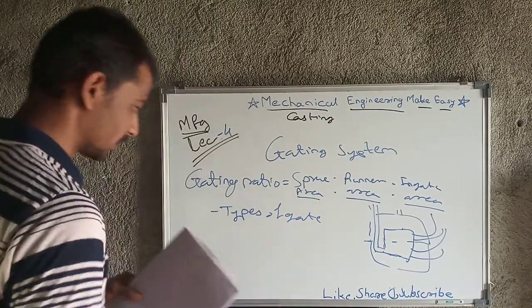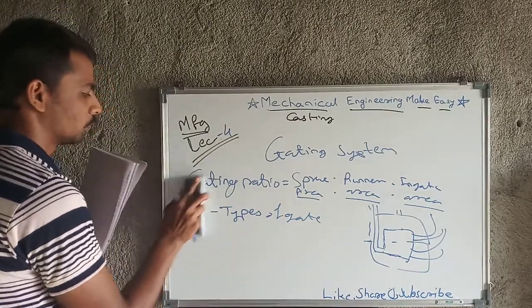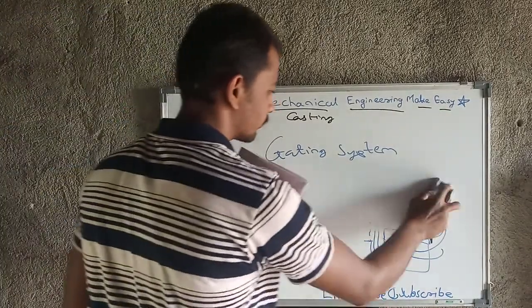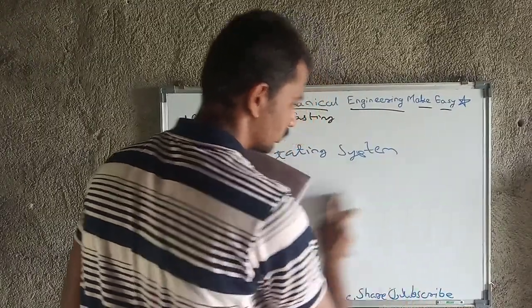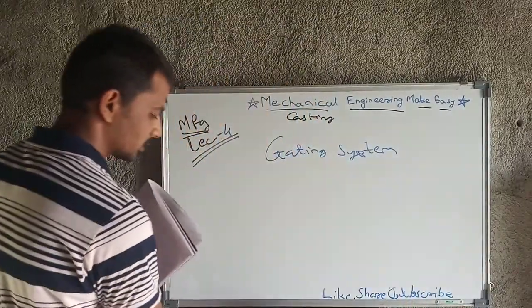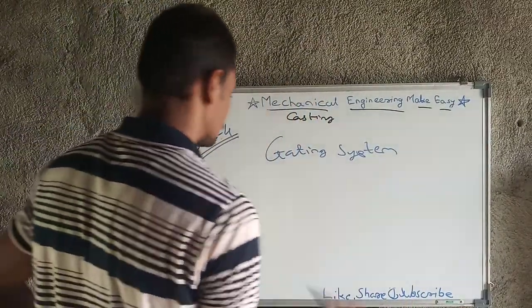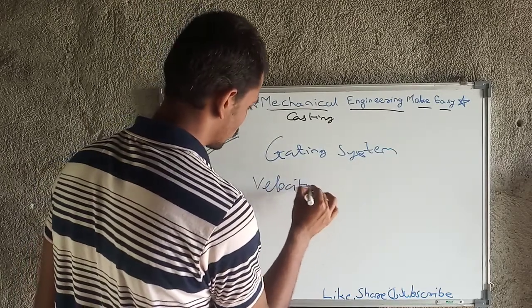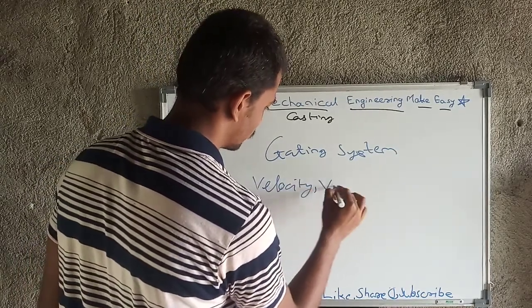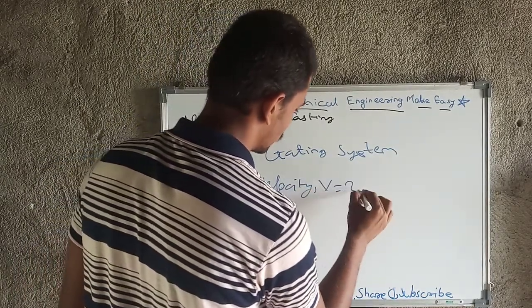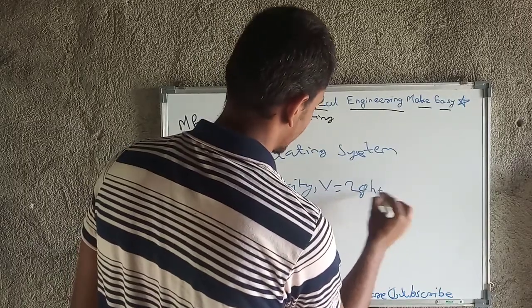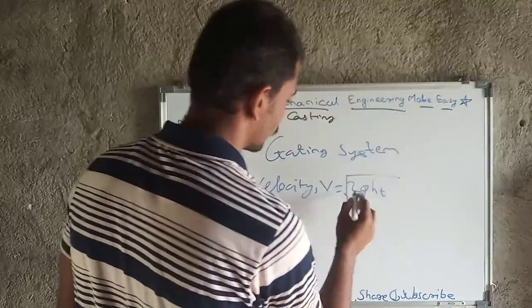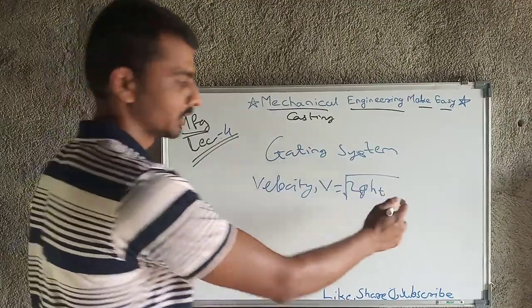Next is velocity. We are pouring molten metal, so the velocity of that molten metal is an important parameter for us.